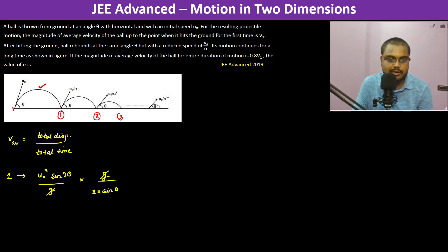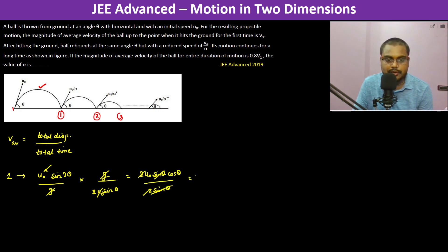When we divide, g cancels and U₀ cancels. The expression simplifies: sin(2θ) equals 2 sinθ cosθ, so the 2 sinθ cancels with the denominator. This becomes U₀ cosθ. So V₁ equals U₀ cosθ — that is the average velocity for the first parabolic flight.